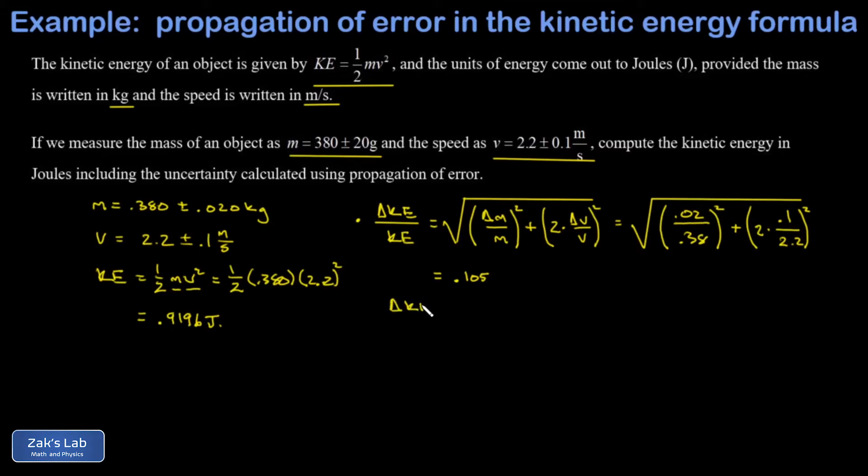To finish the problem, I still have to isolate the uncertainty in the kinetic energy. To get that done, I have to multiply both sides by the kinetic energy itself, and that was 0.9196, and I end up with 0.097.